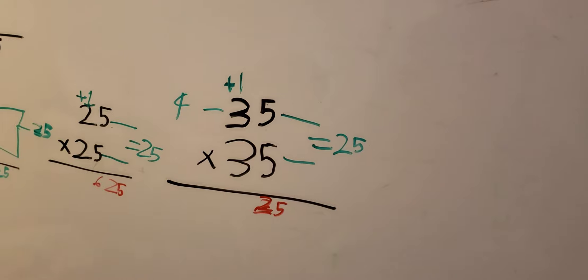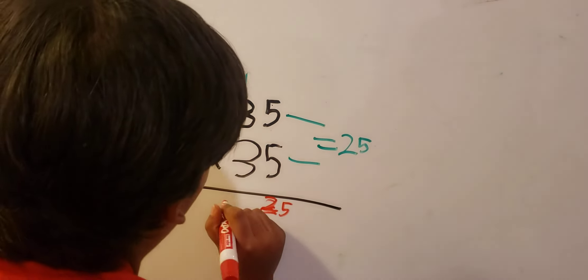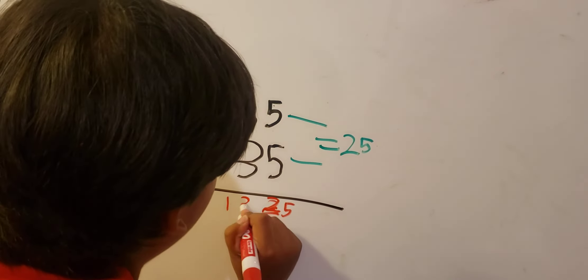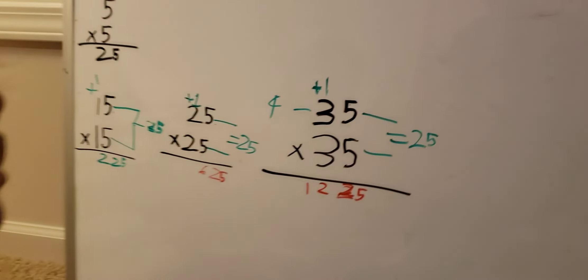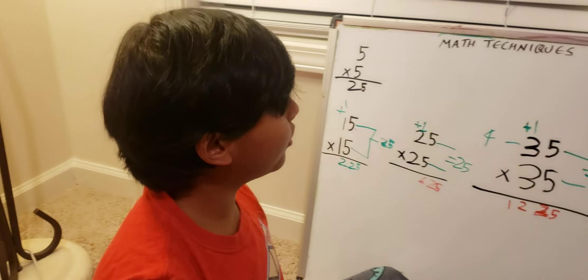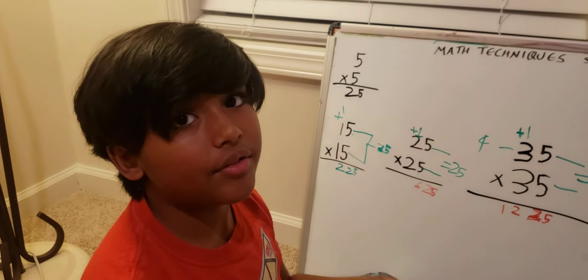4 times 3 is 12, so the answer is going to be 1225. And that also happens to 45, 55, 65...